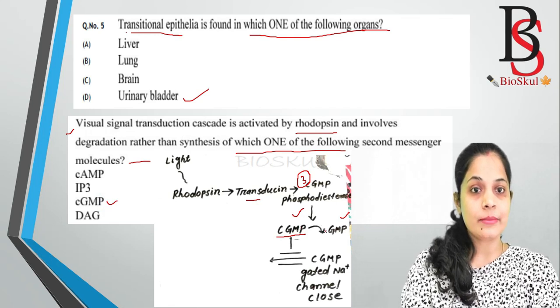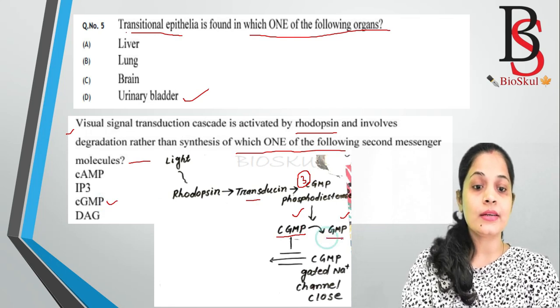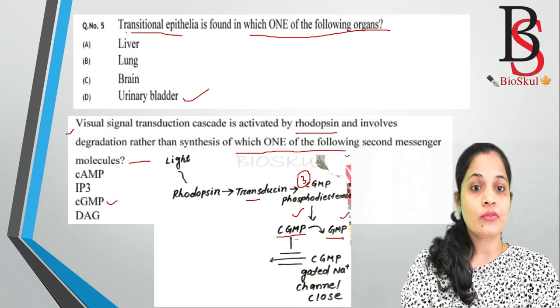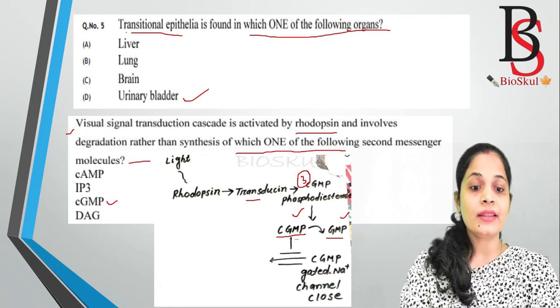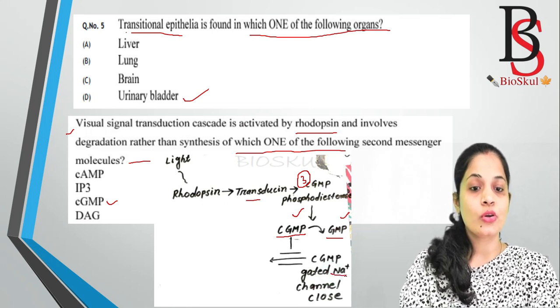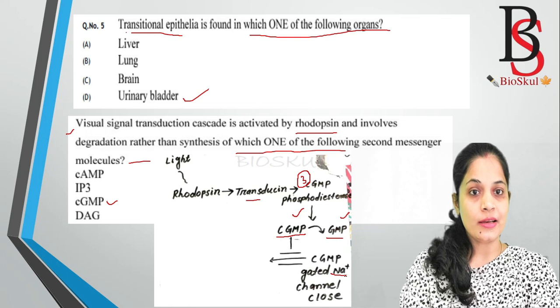When cyclic GMP is degraded into GMP, that leads to the closure of sodium channels.